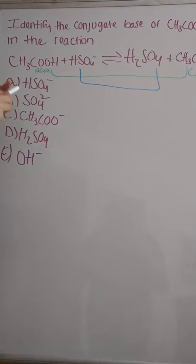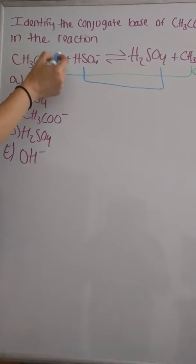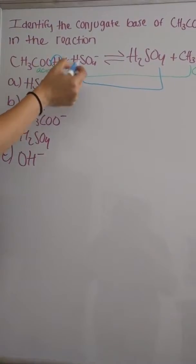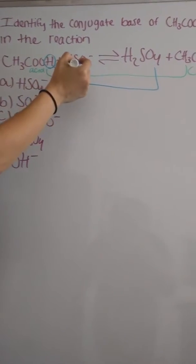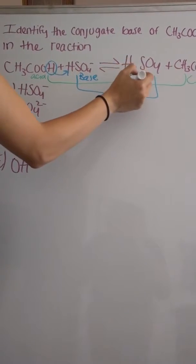And for HSO4-, since this acetic acid lost a hydrogen, it's going to give it to HSO4- making this the base. And that's the conjugate acid.